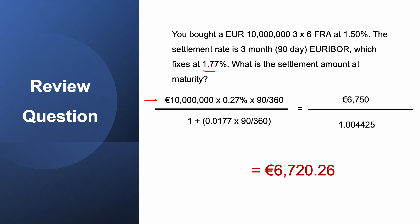The answer is A. Using the FRA settlement formula: notional principal €10 million, times the difference between settlement rate and FRA rate (1.77% minus 1.50% = 0.27%), times 90/360. The numerator works out to €6,750. The bank says: we know we'll pay you in 90 days, but let's give you the money now — and €6,750 in 90 days is not the same as €6,750 today. So we discount it by dividing by (1 + 1.77% × 90/360). You need to know how your calculator works — use STO to store numbers and recall them to divide. The net result is €6,720 compensation, which feels right.